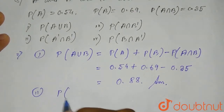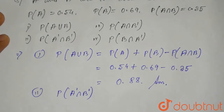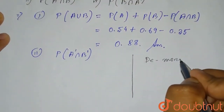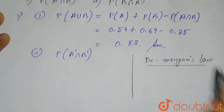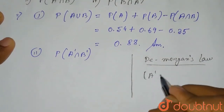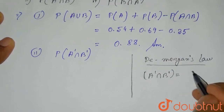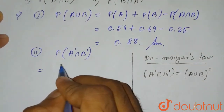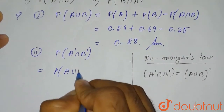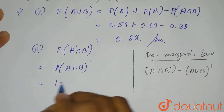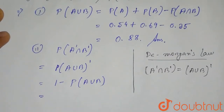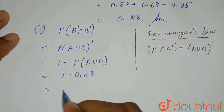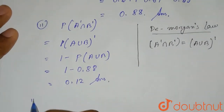The second one is P(A'∩B'). For this we apply De Morgan's Law, which states that A'∩B' = (A∪B)'. So P(A'∩B') = P((A∪B)') = 1 − P(A∪B) = 1 − 0.88 = 0.12. This is the second answer.